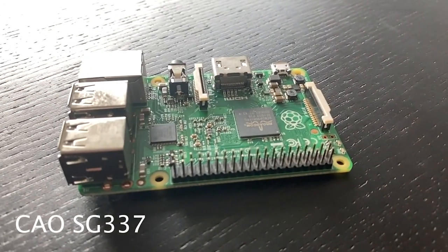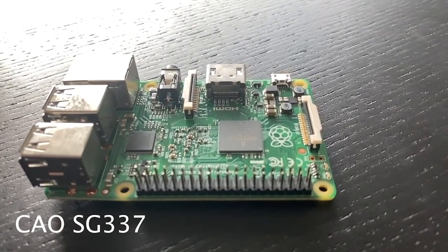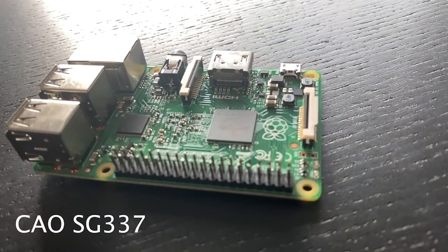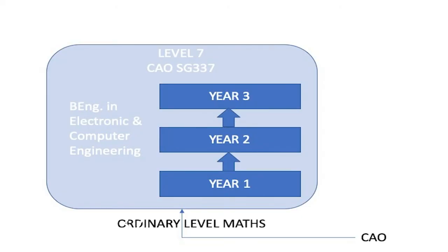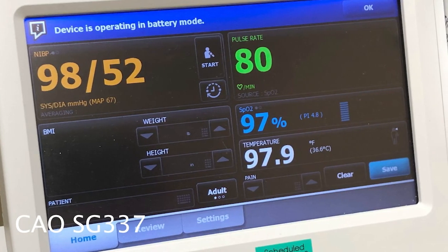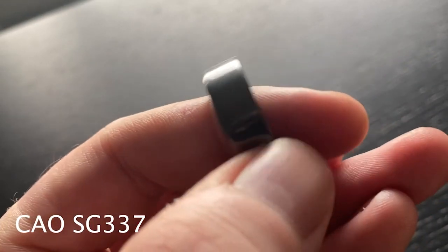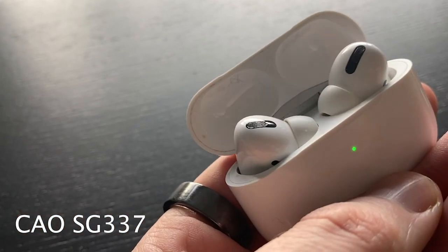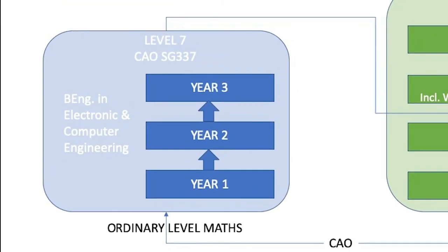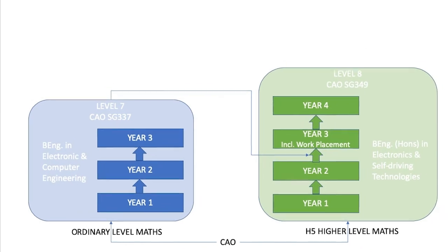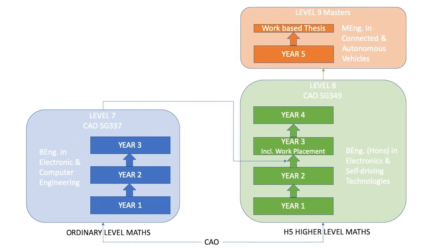If you are interested in technology or engineering, but are not doing higher level maths, why not consider our level seven in electronic and computer engineering? This is a three year program that looks at the design and development of embedded electronic systems. These are the medical devices that keeps us healthy, the consumer devices that keeps us entertained, or the controlled systems that keeps us safe on the road. You can then progress on to the level eight in electronics and self-driving technologies, and from there to the masters. Check out the link below for more information.